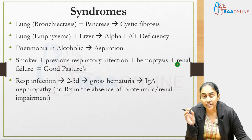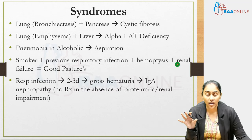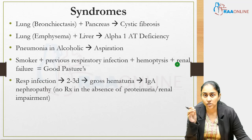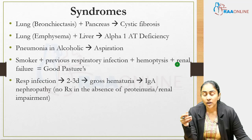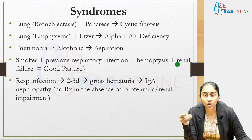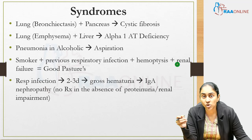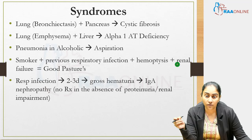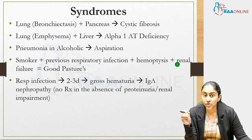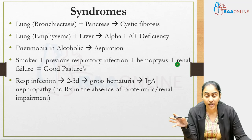When a respiratory tract infection is described and within two or three days the patient develops gross hematuria — significant blood in urine but no protein — this is IgA nephropathy. Remember, most IgA nephropathy cases spontaneously remit and treatment is not required in the absence of proteinuria or renal impairment.